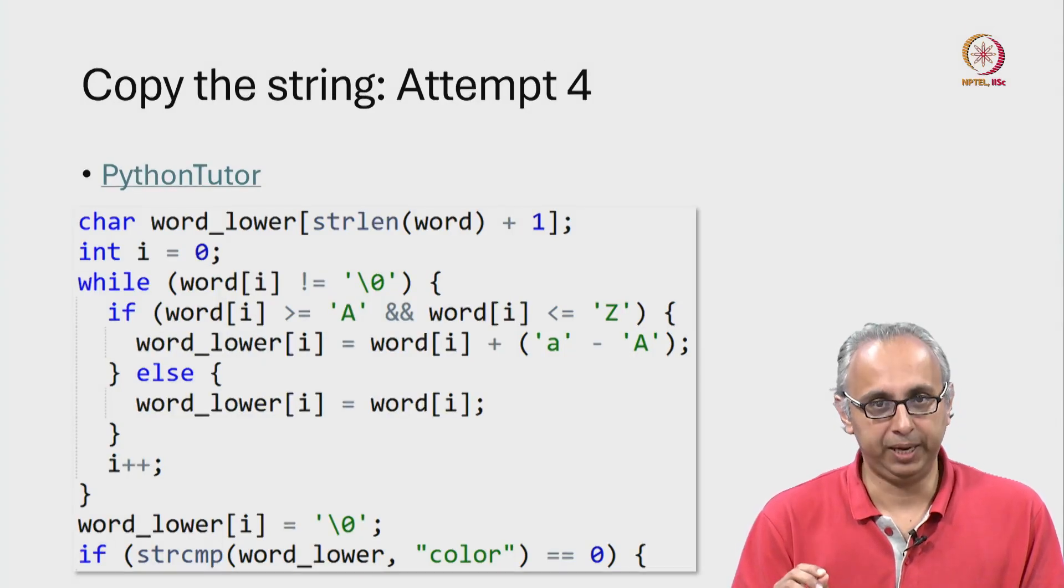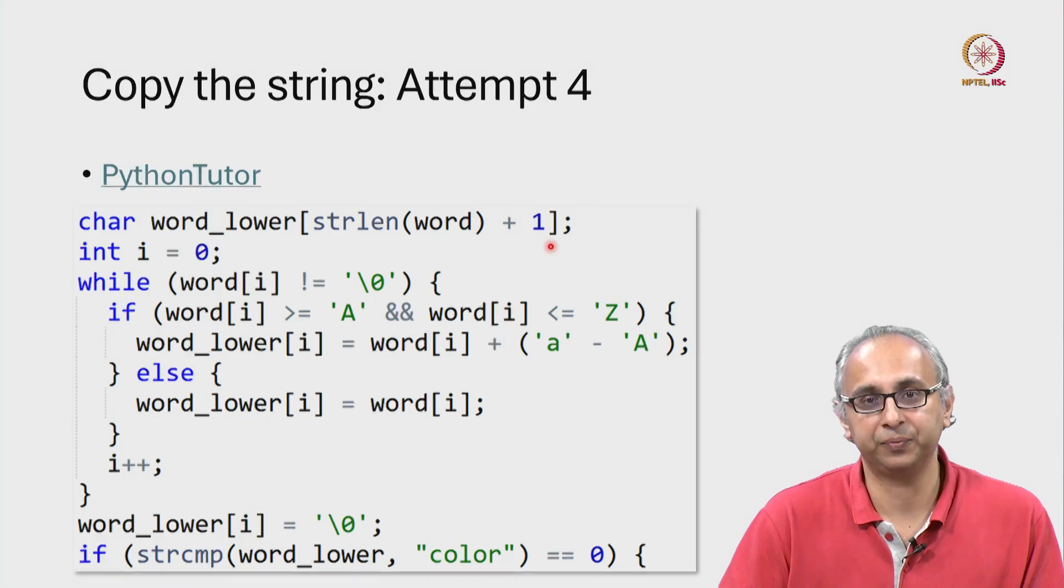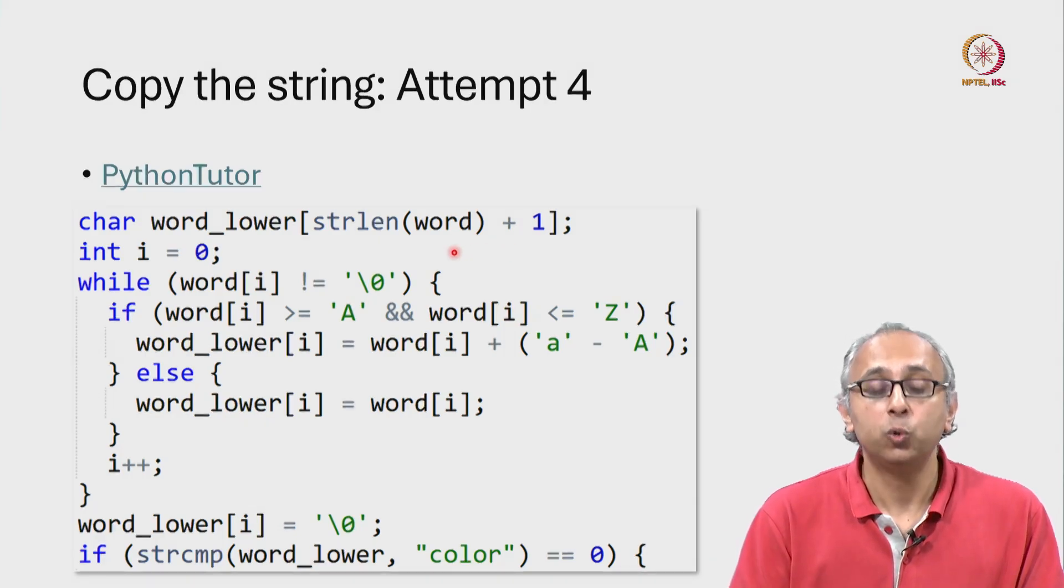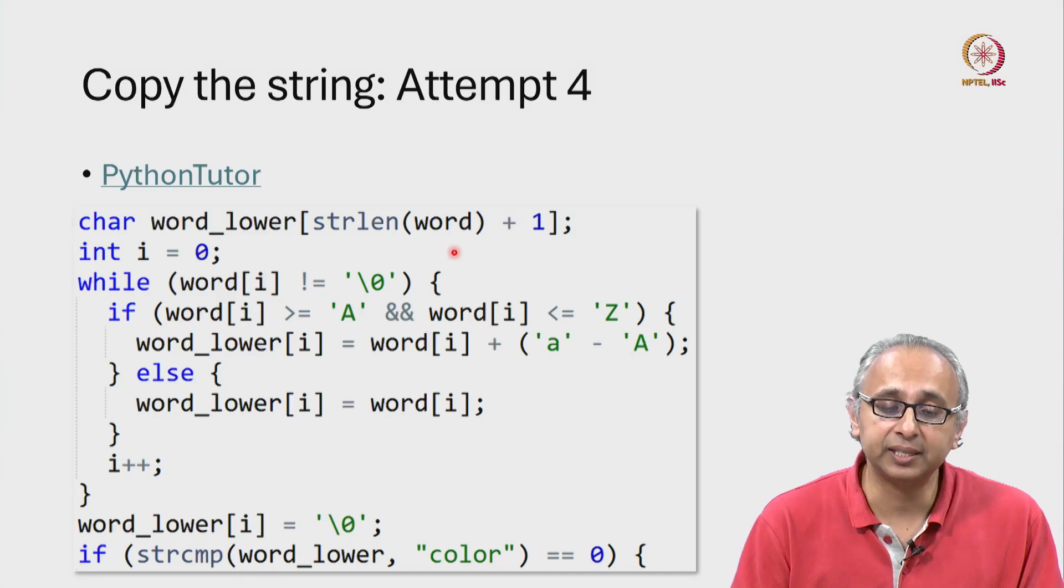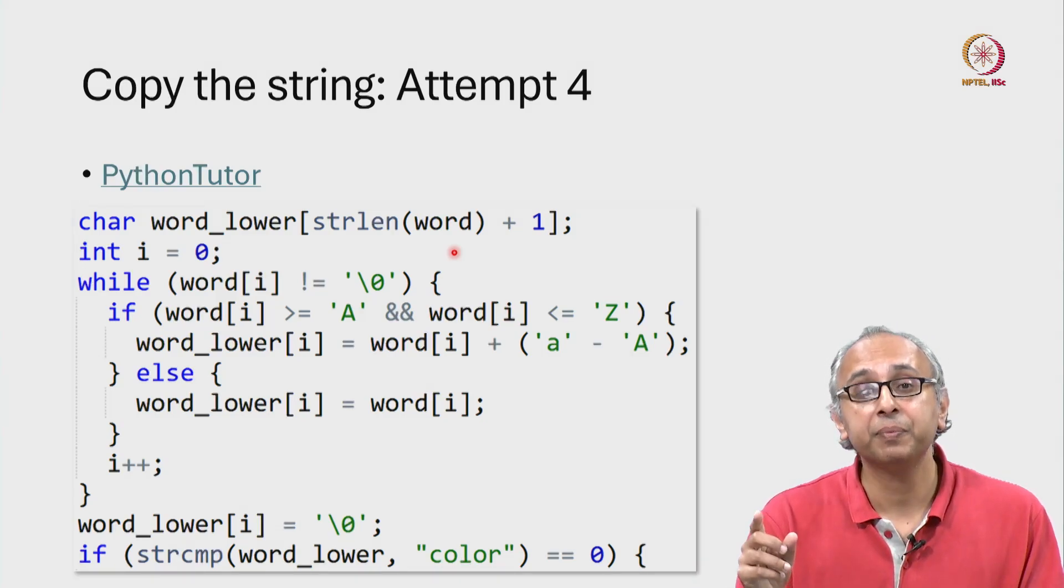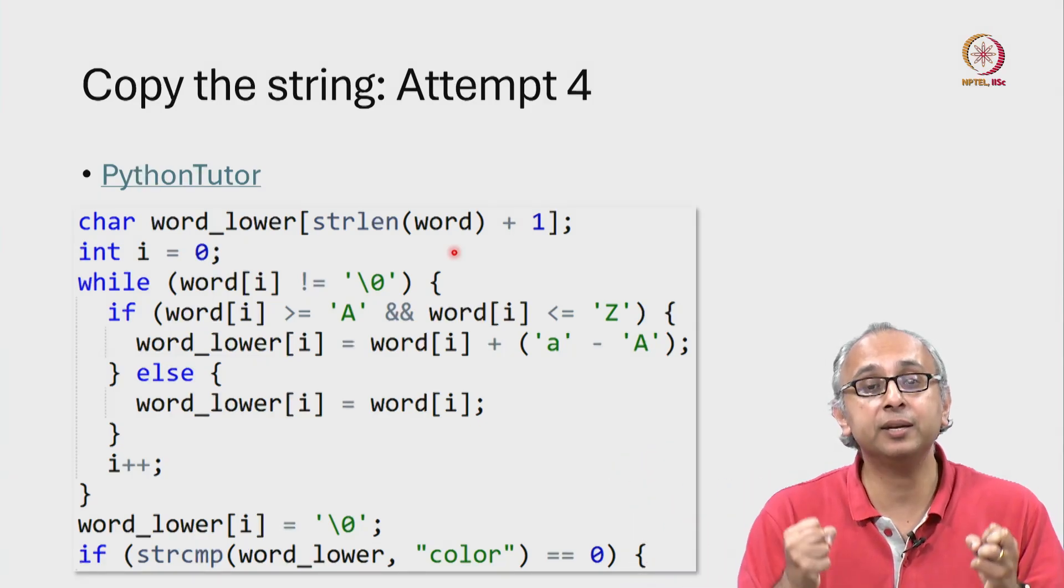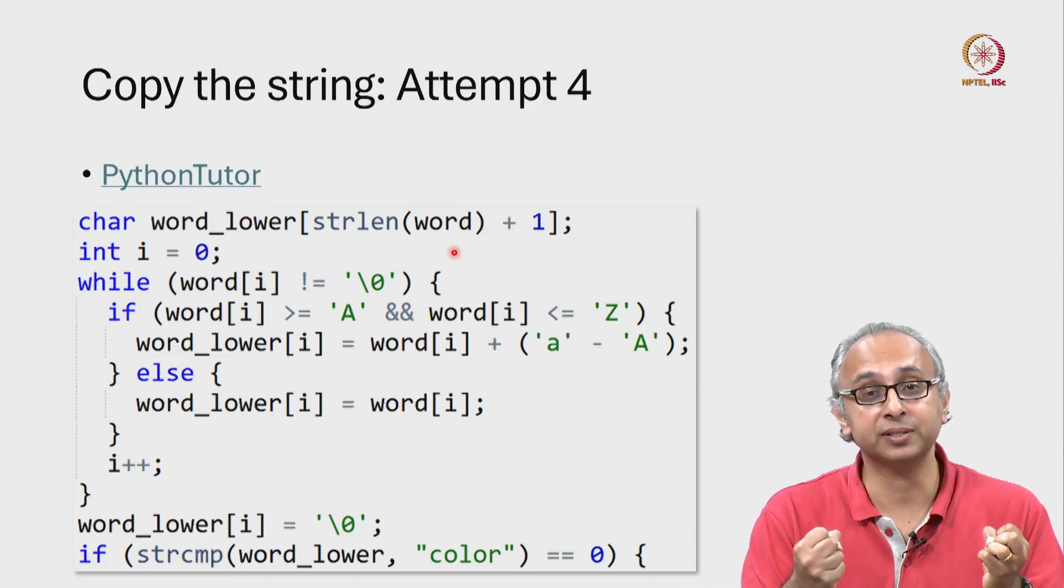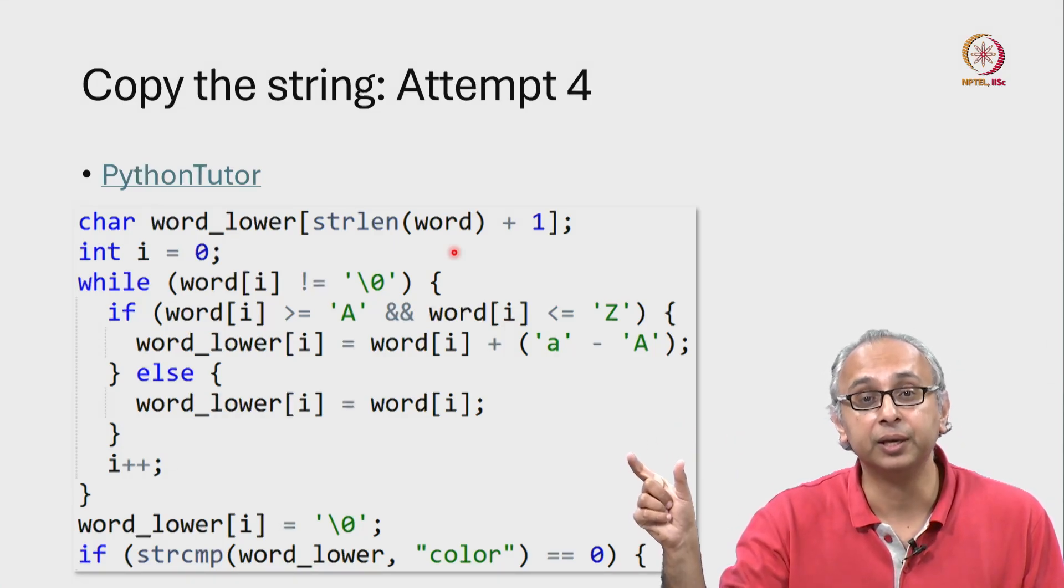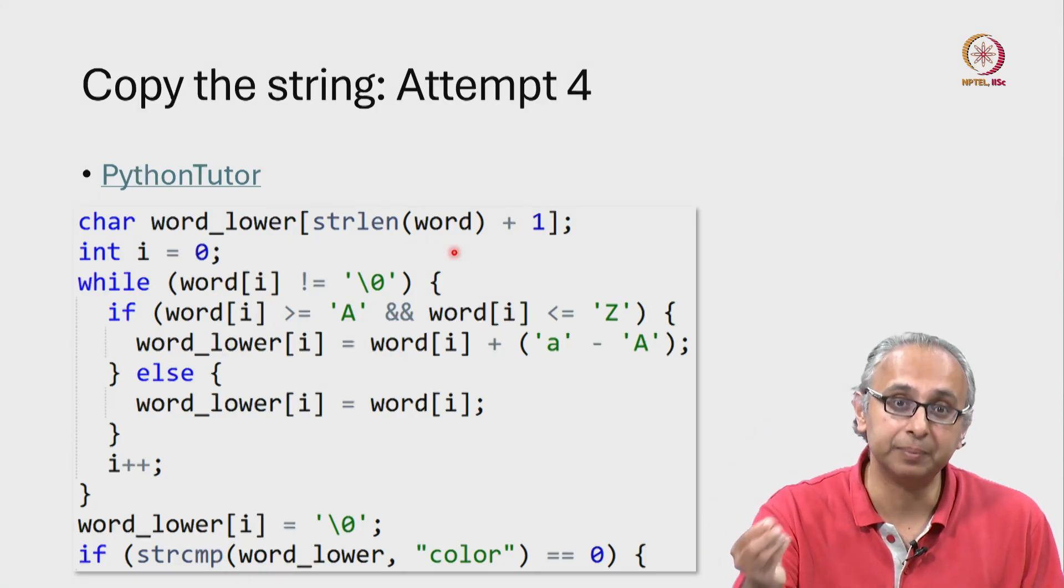So the change we're going to make is instead of allocating this array on the stack, we are going to allocate it on the heap because it turns out that memory allocated on the heap is not cleared away when this function returns. And so the base address of that new string which is allocated on the heap can be returned by this function.